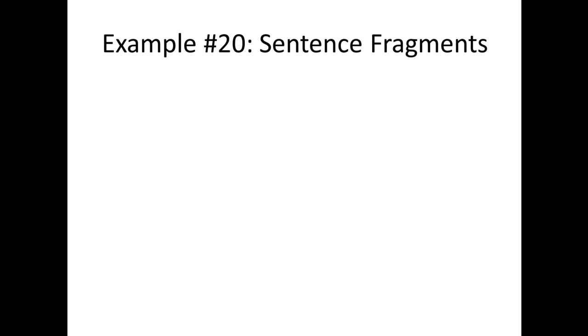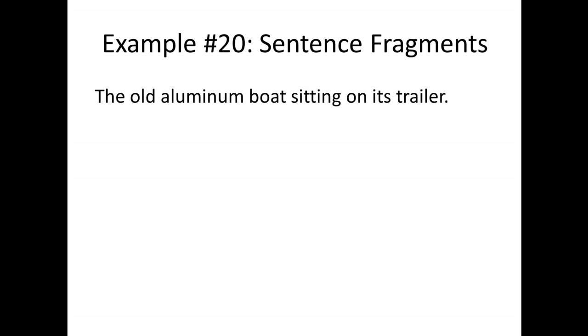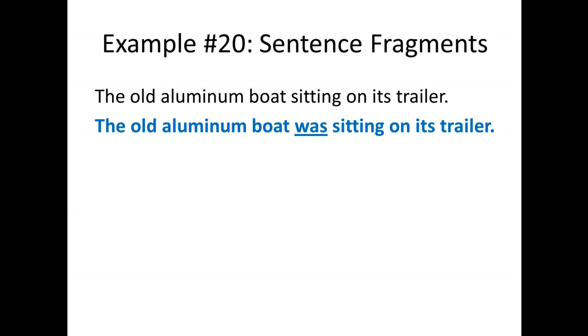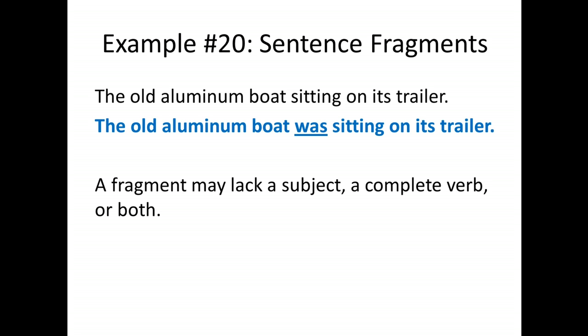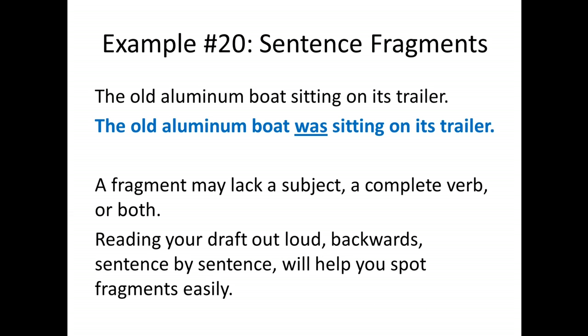Error number twenty is sentence fragments. 'The old aluminum boat sitting on its trailer' — it's a lovely image, but it's not a sentence. It should be 'The old aluminum boat was sitting on its trailer.' We needed a verb. A fragment may lack a subject, a complete verb, or both. Reading your draft out loud backwards sentence by sentence will help you spot fragments easily. In fact, if you've found that any one of these 20 common mistakes is something you fall into, reading your paper out loud and backwards sentence by sentence will help you catch them. When you hear it spoken, you will often hear that something was missing. This concludes the theoretical lecture for week eight.